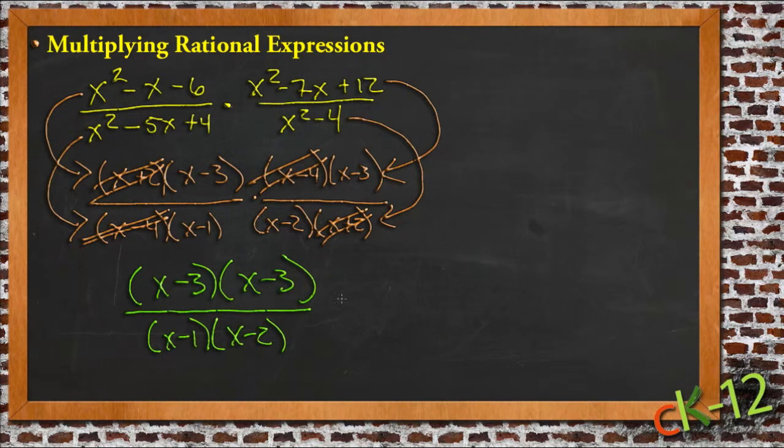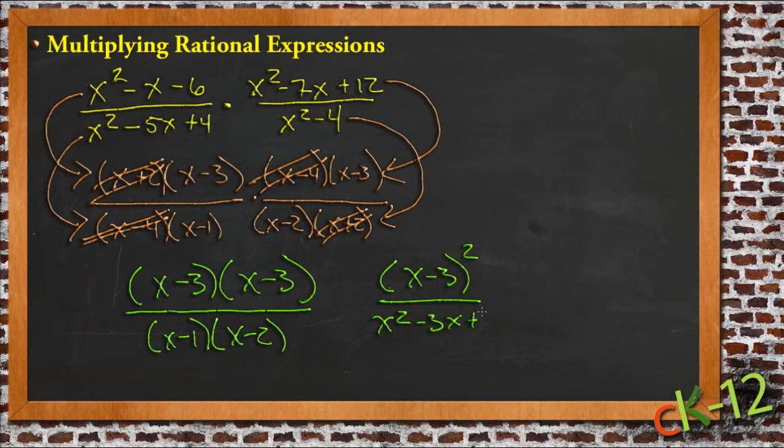If you want to go ahead and multiply those back out, we could actually just write the top as x minus 3 quantity squared. And then the bottom would be x squared minus 3x plus 2. And we're done.